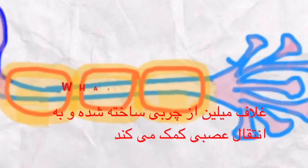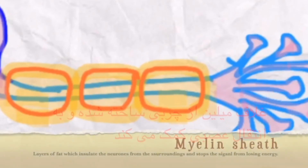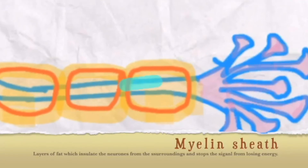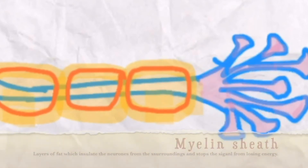What does the myelin sheath do? The myelin sheath insulates a neuron from its surroundings, so the impulse does not lose energy. It also speeds up neurotransmission as the impulse jumps across the gaps in between the myelin sheath.